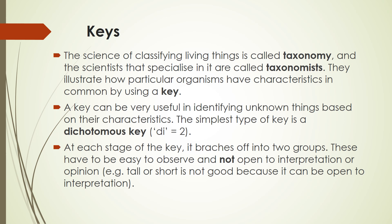The simplest type of key we'll mainly look at is called a dichotomous key. The prefix 'di' means two, so at each stage of a dichotomous key it branches off into two groups. These groups have to be easy to observe and not open to interpretation or opinion — you can't characterise animals based on height, weight, or things that will change over time. We'll talk about that a bit later on.